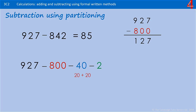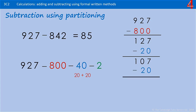You could do that the other way round: 927 take away 800 is 127. Take away that 40 — again you can break that into 2 lots of 20: 127 take away 20 is 107, take away another 20 is 87, and then take away the 2 — that's 85.